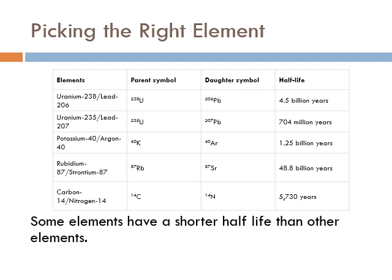Uranium-238 breaks down into lead-208 in 4.5 billion years, so its half-life is literally the age of the Earth. Another type of uranium, uranium-235, will break down into lead-207 in 704 million years — its half-life is 704 million years. So within 704 million years, you would go from having one pound of U-235 to half a pound of U-235 and half a pound of lead-207. That makes it a little bit easier to start dating the earliest fossils on the planet.